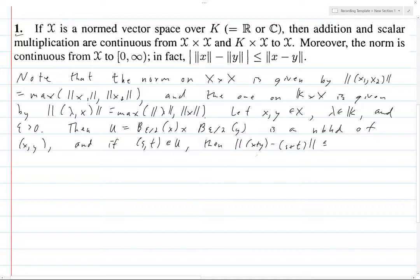if you have this pair (s, t) in this neighborhood of (x, y), then f(x, y) minus f(s, t) is less than epsilon. But here, our f is just the addition function. And so that's what this is.